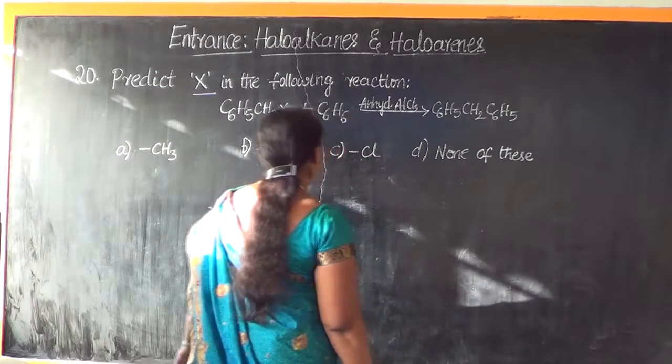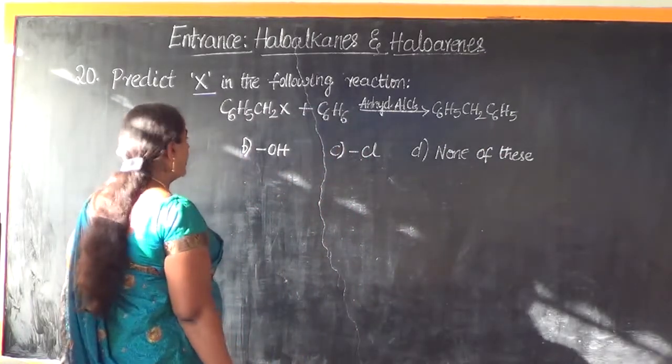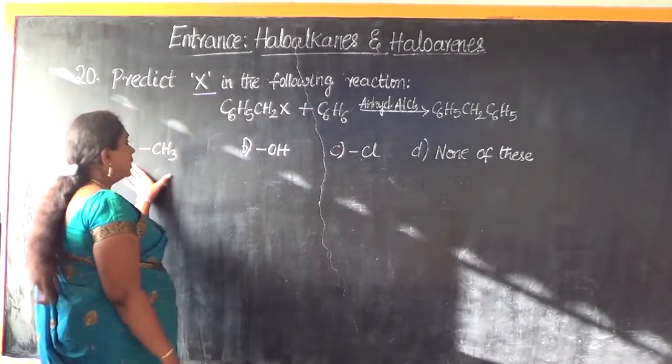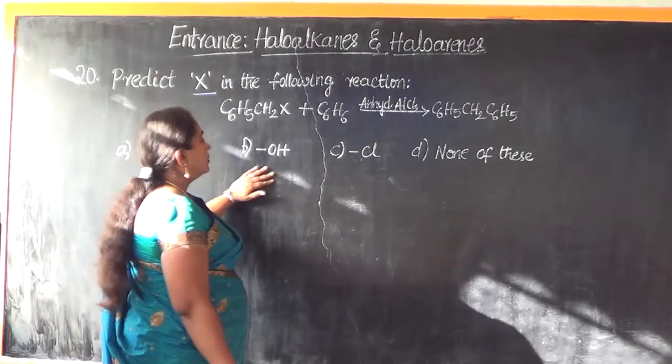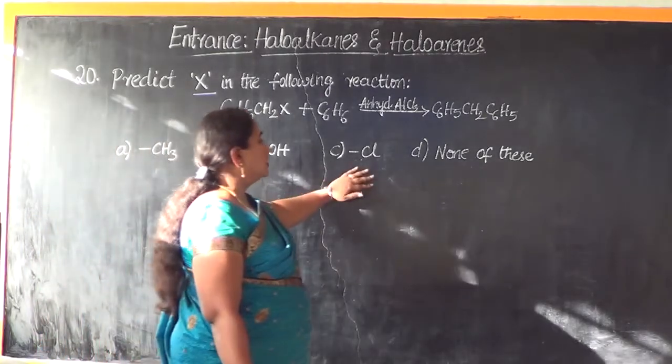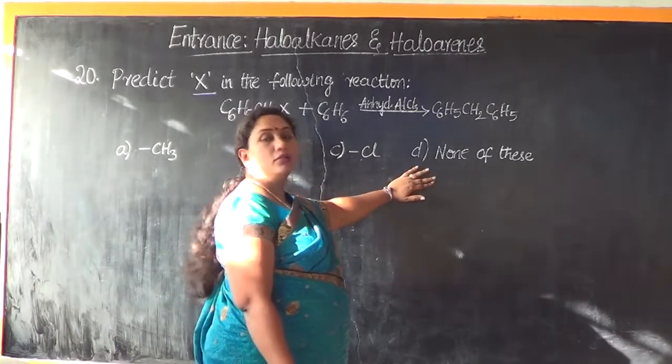So now, let us look into the options given to us. Option A is CH3, option B is OH, option C is Cl, option D is none of these.